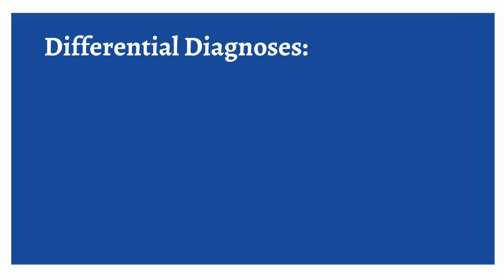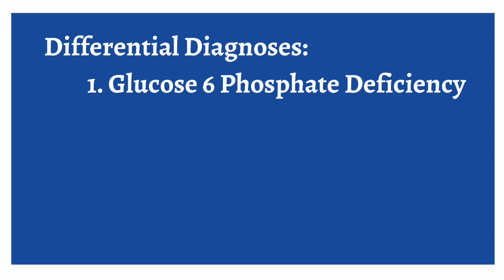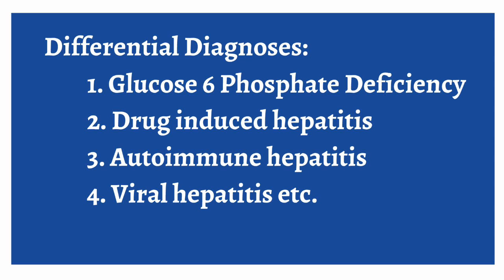Because I mentioned that we're going to talk about G6PD deficiency, you may be thinking that G6PD deficiency is the only cause for this patient's symptoms. Remember that it's important to form a list of differential diagnoses. In addition to G6PD deficiency, you should also consider drug-induced hepatitis, autoimmune hepatitis, and even unrelated issues such as viral hepatitis, to name a few. However, for the sake of this discussion, we will focus on G6PD deficiency.